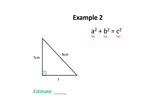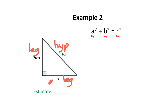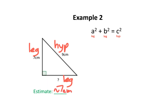In our second example, we have a right triangle. We know that the hypotenuse is 9 centimeters, one of the legs is 7 centimeters, and the other leg is unknown. Before doing any calculations, let's make an estimate. We know the hypotenuse is the biggest side at 9 centimeters, so this leg should be less than 9 centimeters. I'm going to estimate it to be about 7 centimeters, since it looks very similar to the other leg.